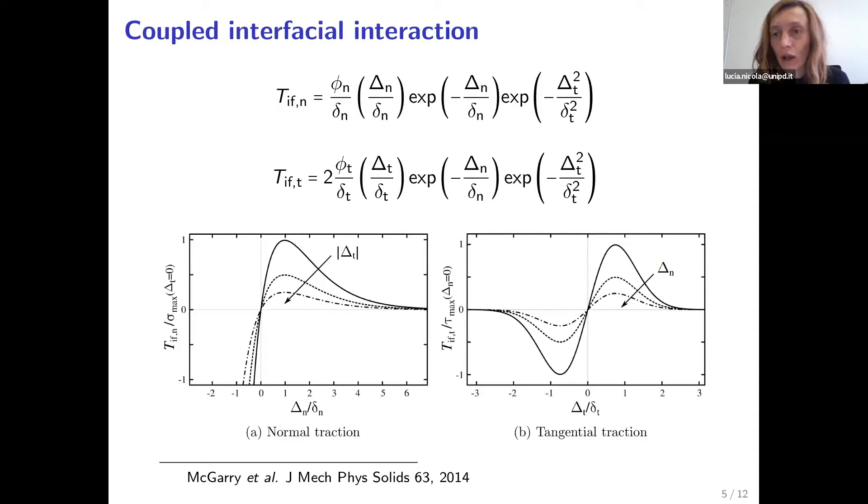And what is more important is what we do at the interface. And here we use traction separation laws between the nodes in opposite surfaces, which were introduced by McGarry in 2014. So you can see that these traction separation laws are coupled. Both the normal traction separation law and the tangential traction separation law depend both on the normal separation and on the tangential separation. So this means that when we have an increase in the tangential separation, we have a decrease in adhesion. And when we have an increase in the normal separation, we have a decrease in the tangential tractions, therefore in friction.